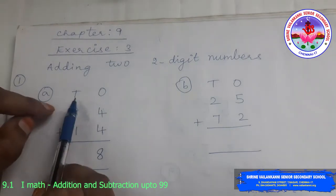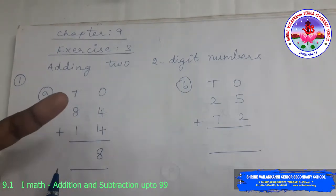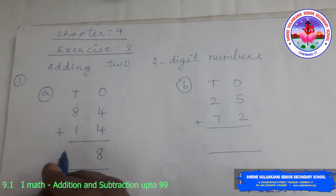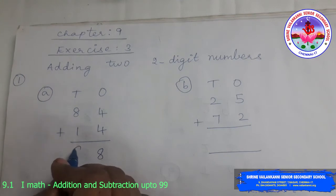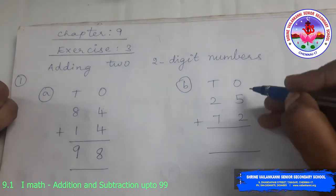Now, moving to the 10s place. 8 plus 1. 8 in the mind, 1 in the finger. After 8, yes, it is 9. So the answer is 84 plus 14 is 98. We will see one more example.